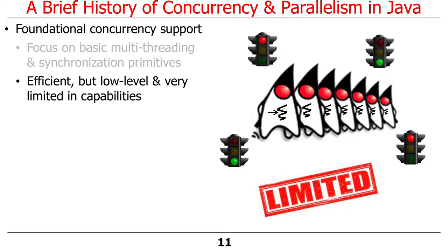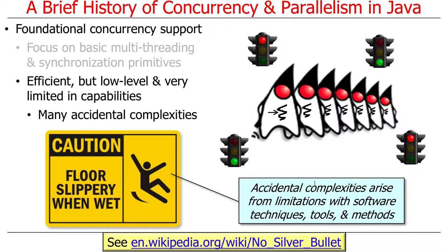However, it's very low-level and very limited in capability. In particular, there are lots of accidental complexities — problems that arise due to limitations with the software techniques, platforms, tools, and methods we use. Java 1.0 concurrency support is very accidentally complex: you can put locks in the wrong place, have deadlocks, race conditions, and memory inconsistencies. You also have to spawn threads, remember to start them, remember to join them, and it just becomes complicated.